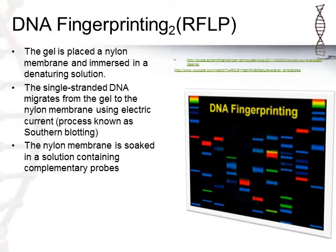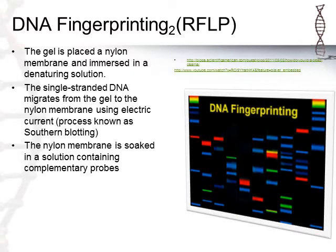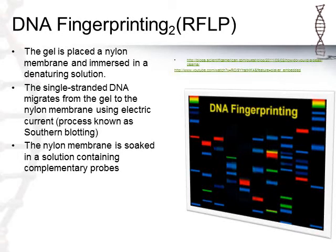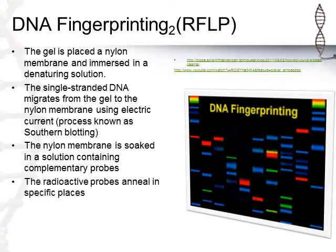The nylon membrane has been soaked in a solution carrying complementary probes that can target specific sequences. So maybe we're looking for a particular genetic condition like cystic fibrosis — there would be a probe matching either the correct or incorrect sequence. By knowing whether the probe showed up in further processing, we'd know if a mutation was found at a particular part of the genome. The probes are radioactive, which means we can expose them on X-ray paper. The membrane is placed against X-ray film and developed into an autoradiogram.